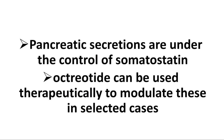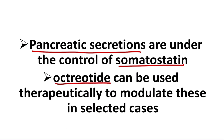Somatostatin is a natural chemical agent which is released in the gut, and pancreatic secretion is under the control of somatostatin. Octatide is also a chemical substance which is a somatostatin analog, and it may be used to reduce the secretion of the pancreas.